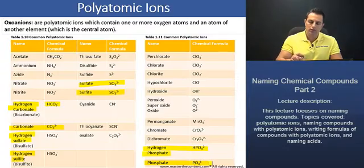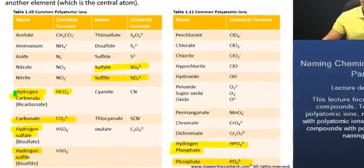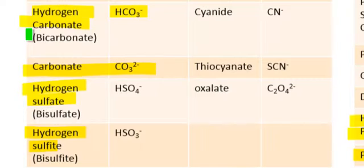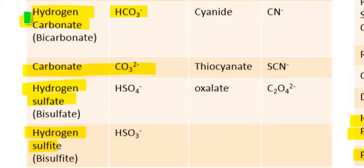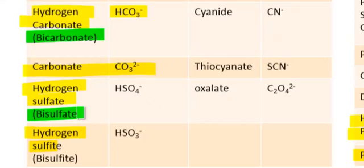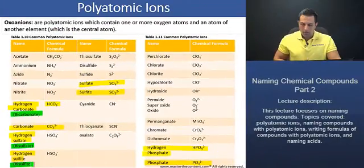Additionally, we should take note of the fact that instead of writing 'hydrogen,' the prefix bi- is given. So instead of writing hydrogen carbonate, you may also see it written as bicarbonate. And instead of hydrogen sulfate, you may see it written as bisulfate, and so on with bisulfite. It's just good to know.